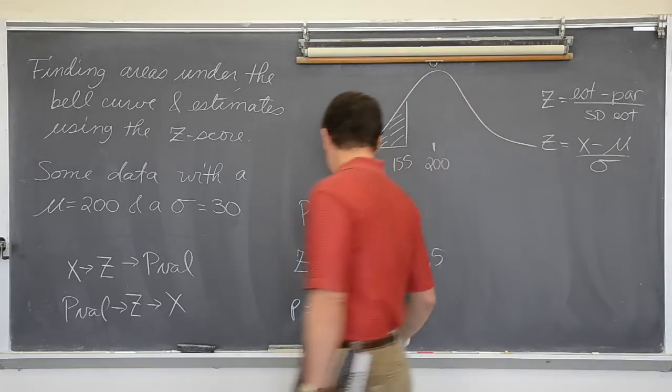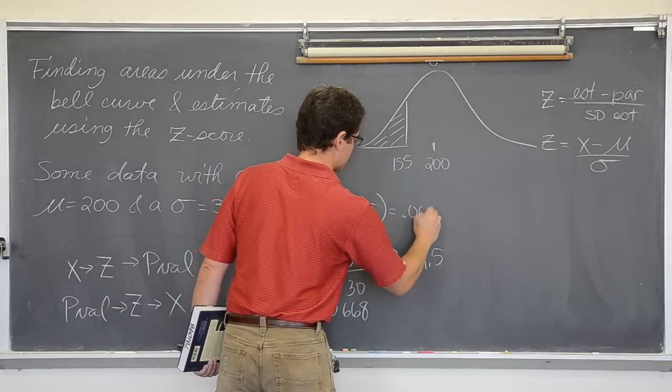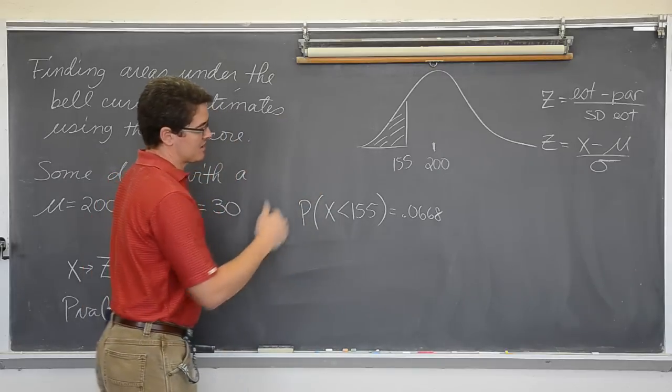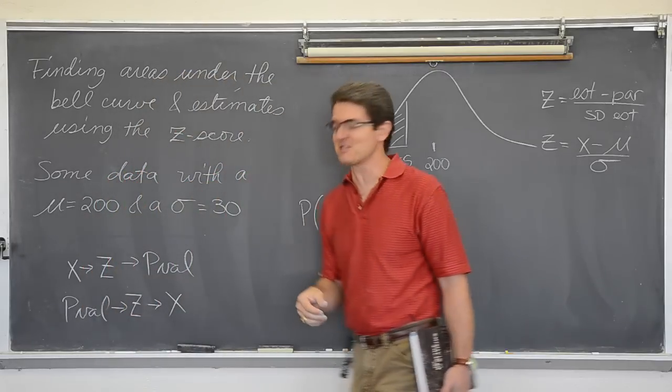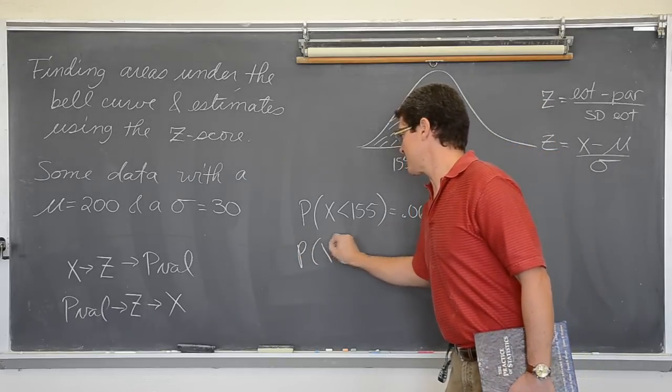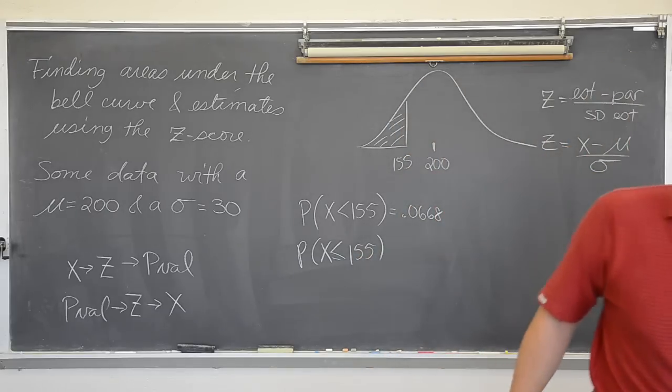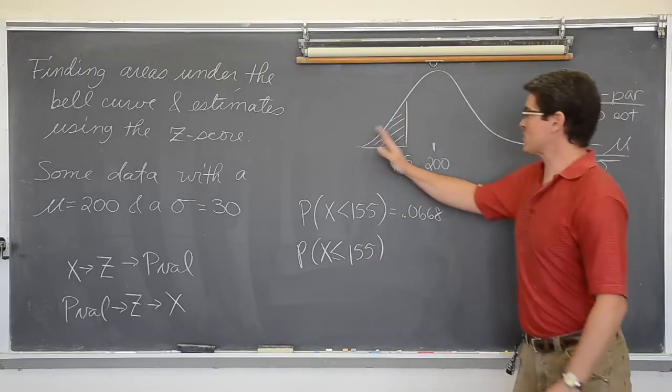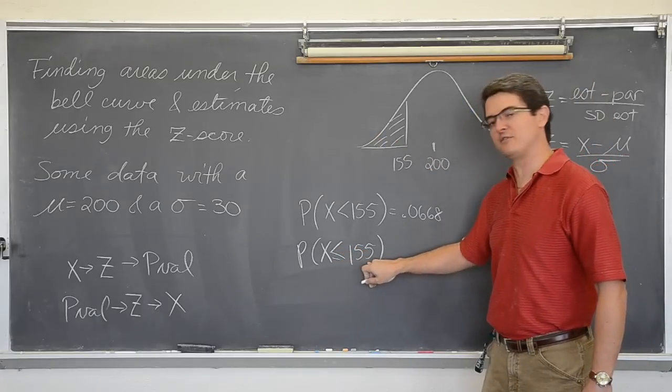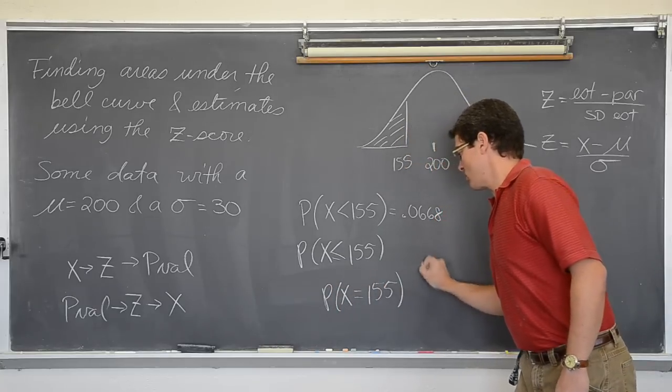So, this answer came out to be .0668. I will need to erase these examples as I go because I did not give myself very much room to do these examples. What is the probability that x is less than or equal to 155? Well, if this is a continuous random variable, the probability of getting exactly 155, the probability that x is 155 is 1.